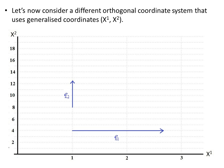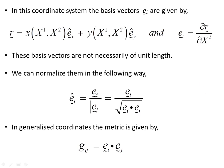Now let's consider a different orthogonal coordinate system that uses generalized coordinates x1 and x2. In this coordinate system the basis vectors are orthogonal but not necessarily of unit length. The basis vectors in covariant form are given by the partial derivative of the position vector — expressed in Cartesian coordinates x and y, which are functions of the generalized coordinates — with respect to each generalized coordinate.